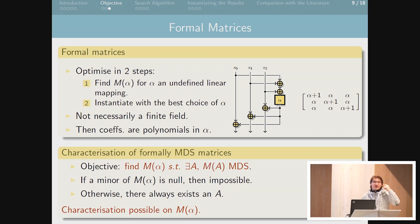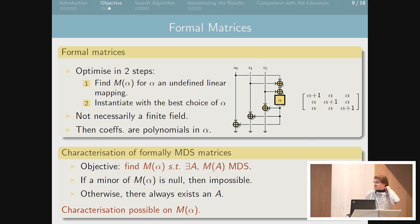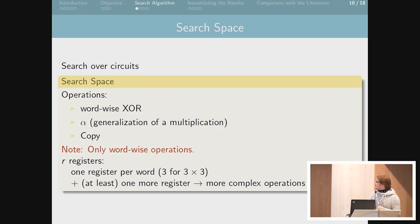We can characterize exactly which formal matrices in alpha are interesting — which ones can give MDS instantiations. We call them formally MDS, which corresponds to having all minors of the formal matrix non-zero, these minors now being polynomials in alpha. We can prove that if the minors are non-zero then we can have an MDS instantiation, and otherwise it's not possible. The rest of the talk proceeds in two steps: first finding lightweight formally MDS matrices, then instantiating them in the lightest way possible.